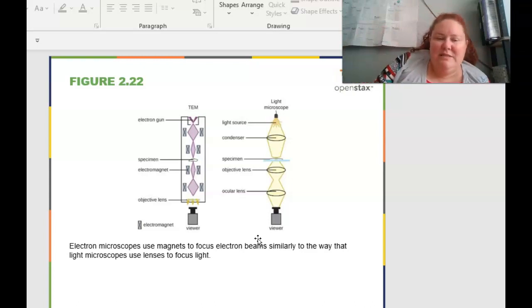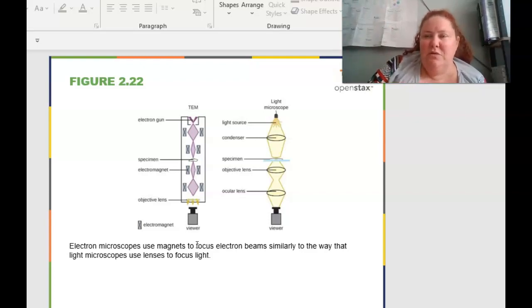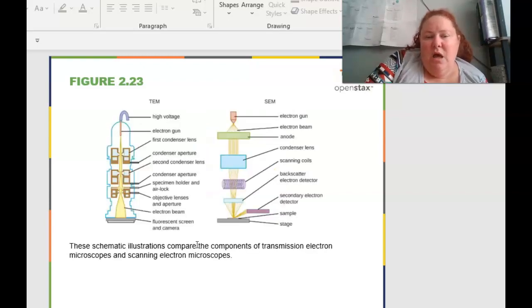One of the ways that we can do this is that the microscopes, the electron microscopes use magnets to focus the electron beams in a way that light microscopes use light. So electrons are charges. And so that would make sense. Magnets have poles, positive or negative poles. So that's how we can utilize them to get very detailed images.